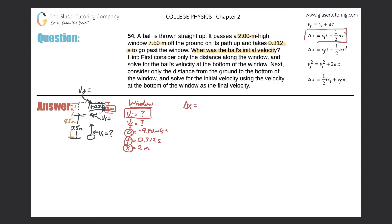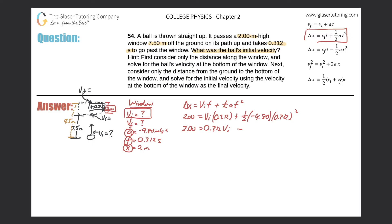The equation is: displacement = initial velocity × time + ½ × acceleration × time². Plugging in: 2.00 meters equals v_i times 0.312, plus one-half times negative 9.80 times 0.312 squared. Computing the second term: 0.5 × negative 9.8 × 0.312² gives negative 0.477.